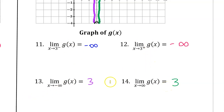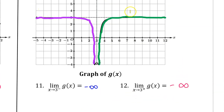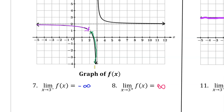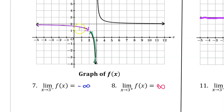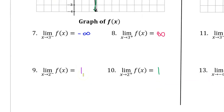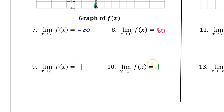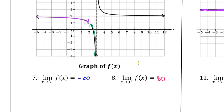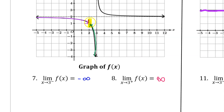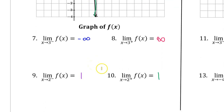Notice that limits are always y values. The limit of 3 was a y value of 3. Negative infinity means the y values are approaching negative infinity. The value of 1 was the y value of the hole. So limits are always y values — keep that in mind.